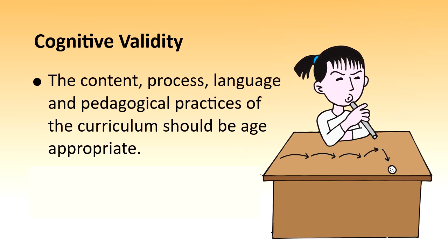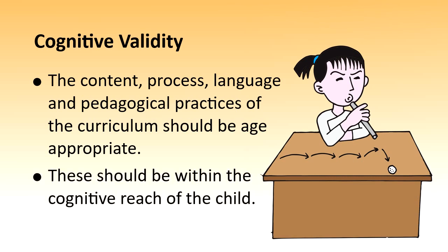Cognitive validity means the content, process, language, and pedagogical practices of science should be appropriate to the age of the learner. What content should go at the upper primary, primary, secondary, or senior secondary level? What kind of language should be used in texts and teacher-learner communication? What pedagogical methods should be used? Everything should be decided keeping in mind the age of the learner and ensuring all of it is within the cognitive reach of the child — meaning their mental abilities.